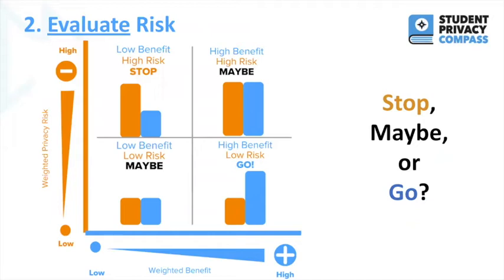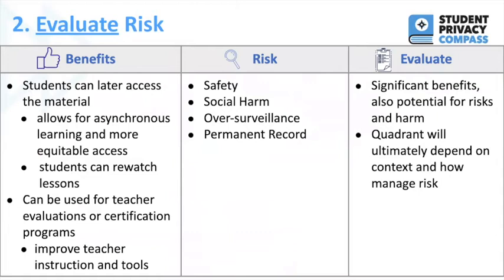After identifying risk, the second step of risk management is evaluating the risk — weighing it against the benefit. In our example, is the benefit to recording a virtual classroom high or low? And how about the risk — is that high or low? In general, if there's a low benefit and a high risk, you probably want to stop and not move forward; the benefit is just not worth the risk. On the opposite end, if there is high benefit and low risk, it seems the benefit may be worth it. In our specific example of recording a virtual classroom, there appear to be significant benefits but also potential for risks and harm, and ultimately the quadrant where this falls will depend on the context and how we manage that risk.